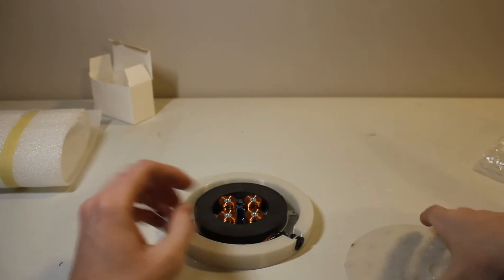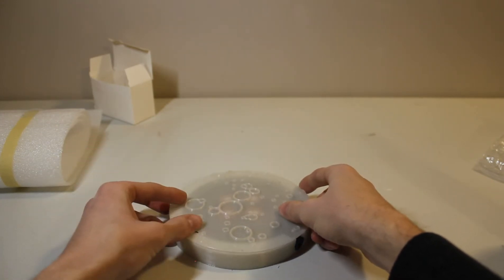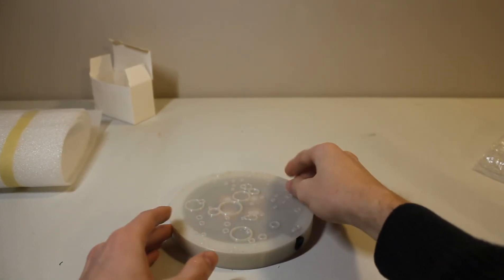There we go. That's nice and flush with the surface of the moon perimeter there. I think that looks pretty good. Let's make sure that cord is secured down. And let's put this surface back on.